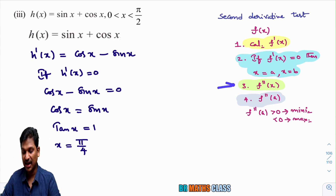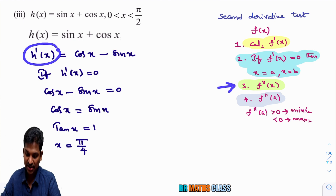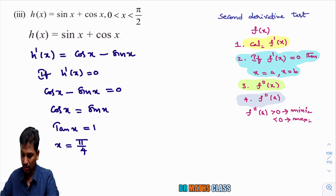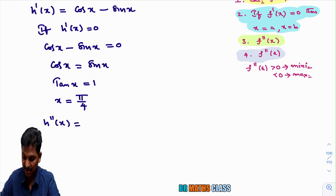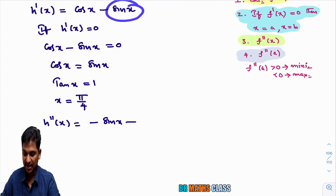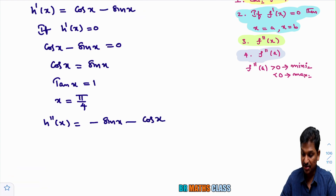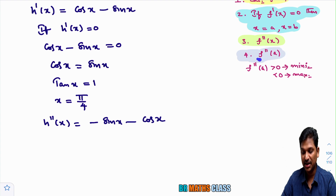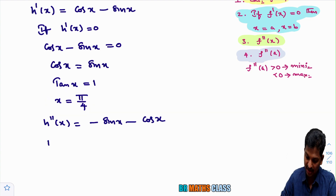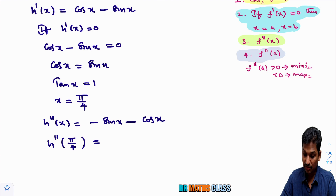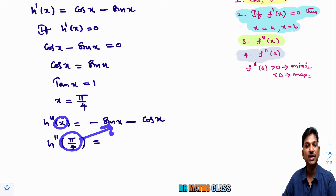Step 3: calculate h''(x) by differentiating h'(x). h''(x) = derivative of cos x minus derivative of sin x = −sin x − cos x. Now compute h''(π/4): substitute x = π/4, giving −sin(π/4) − cos(π/4).